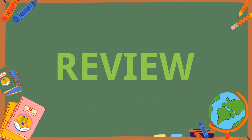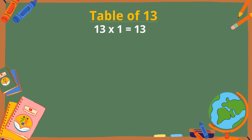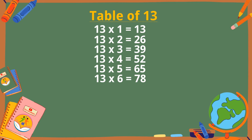Let's revise the table of 13. 13 ones are 13. 13 twos are 26. 13 threes are 39. 13 fours are 52. 13 fives are 65. 13 sixes are 78.